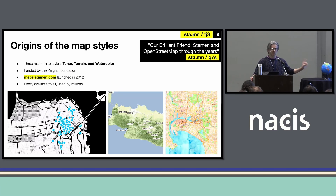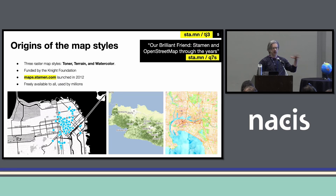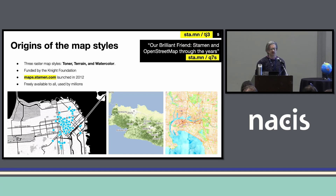The first map was this black and white one called Toner, which was really designed to be good for print — black and white printing for journalists — but also really spare and minimalist for putting data visualization on top of. We made a terrain map; Google had just released a terrain map around that time and people really liked that effect, so we wanted to see what we could do with open source. And we did one called Watercolor, which was really trying to push the limits of what you can do when you have open data. What can you do, how far can you go with writing code that can manipulate what a map looks like? The watercolor map is just amazing what they were able to do.